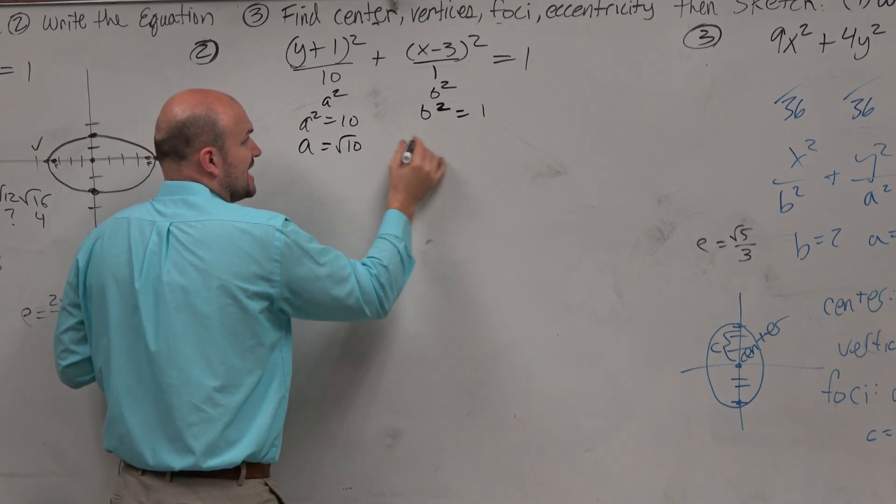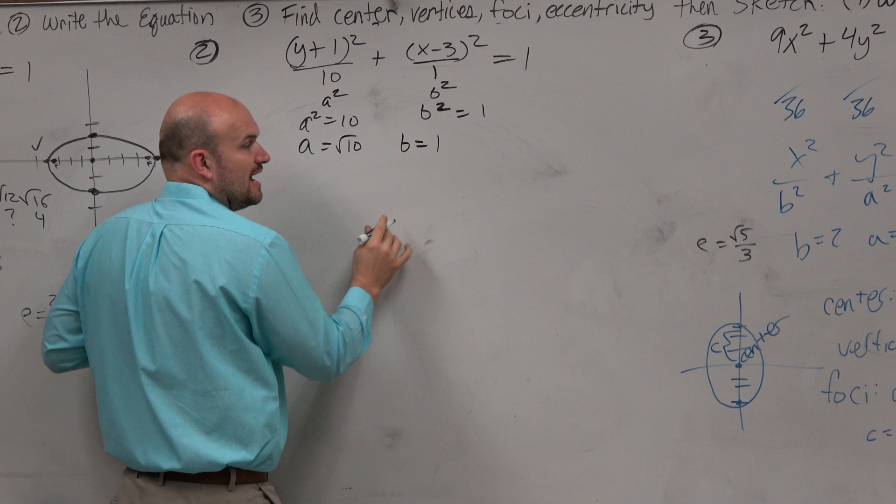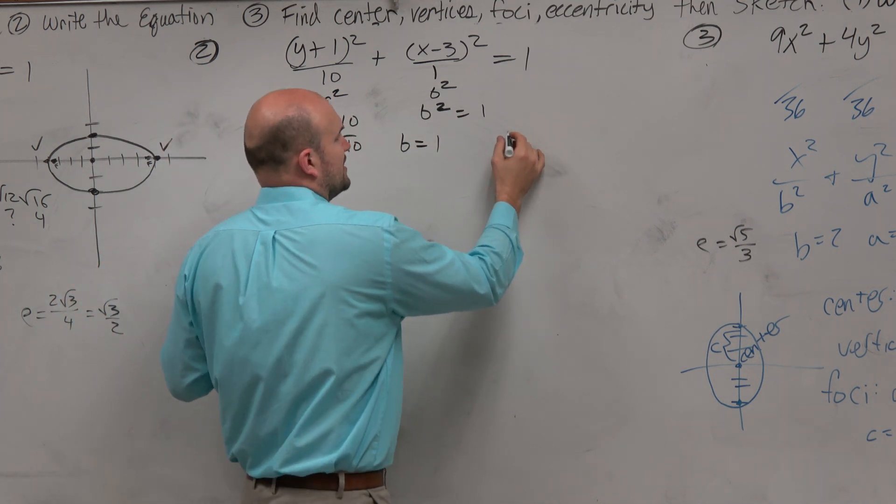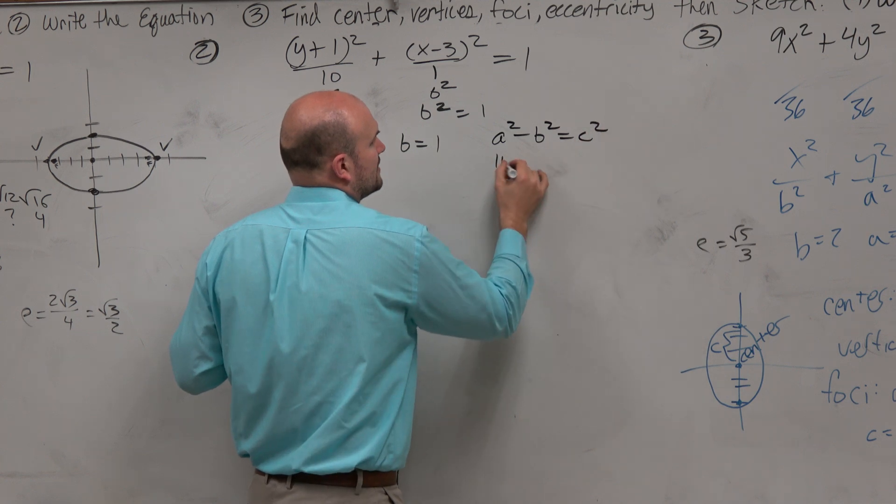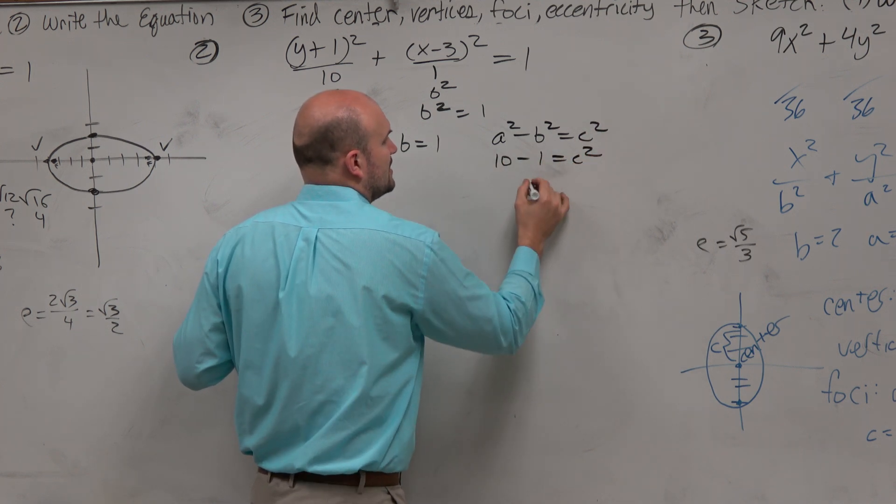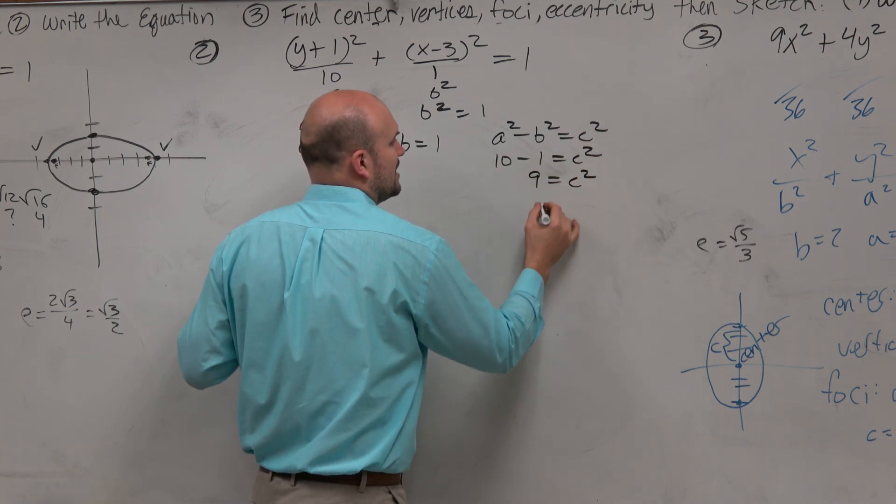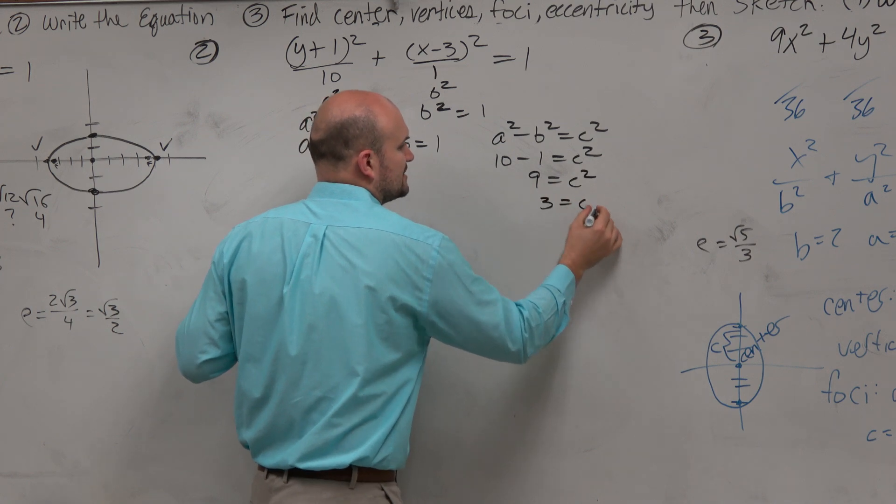A equals square root of 10, b equals 1. And then let's go ahead and figure out c. So therefore, I could do a squared minus b squared equals c squared, 10 minus 1 equals c squared, 9 equals c squared, and 3 is equal to c.